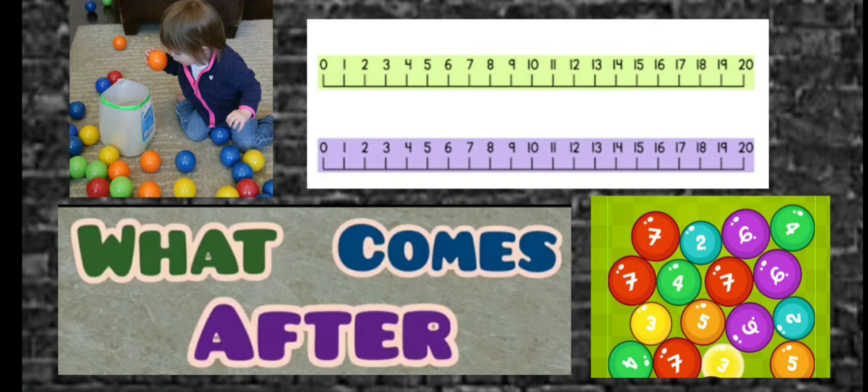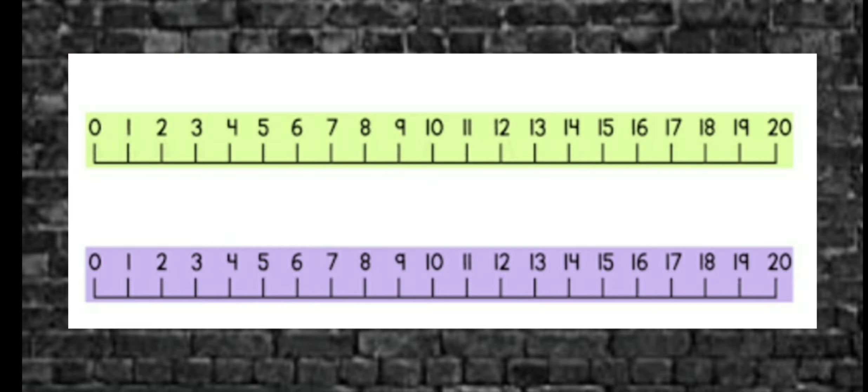You all have a number line in your mathematics toolkit. Place that in front of you and look at it carefully. Look for number 1 and find the number that is next to number 1. That is just after 1. Yes, you are right. It is number 2.